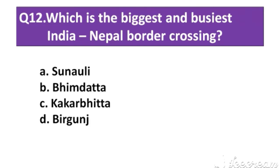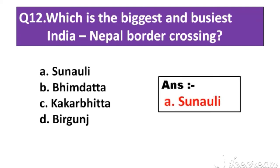Question number 12: Which is the biggest and busiest India-Nepal border crossing? Option A: Sunauli. Option B: Bhimdatta. Option C: Kakarbhitta. Option D: Birgunj. The right answer is Option A: Sunauli.